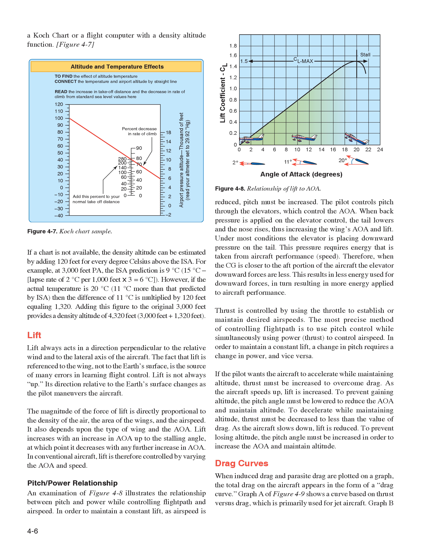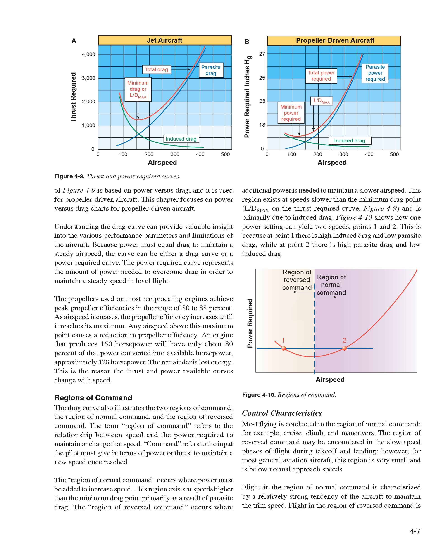Drag Curves. When induced drag and parasite drag are plotted on a graph, the total drag on the aircraft appears in the form of a drag curve. Graph A of Figure 4-9 shows a curve based on thrust versus drag, which is primarily used for jet aircraft. Graph B is based on power versus drag and is used for propeller-driven aircraft. Understanding the drag curve can provide valuable insight into the various performance parameters and limitations of the aircraft. Because power must equal drag to maintain a steady airspeed, the curve can be either a drag curve or a power-required curve. The power-required curve represents the amount of power needed to overcome drag in order to maintain a steady speed and level flight.